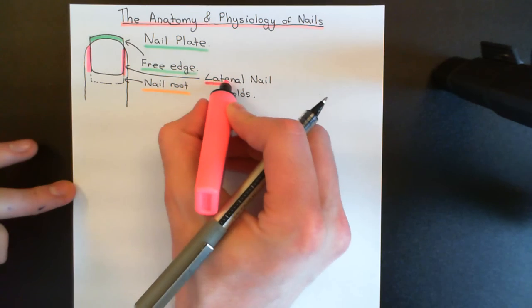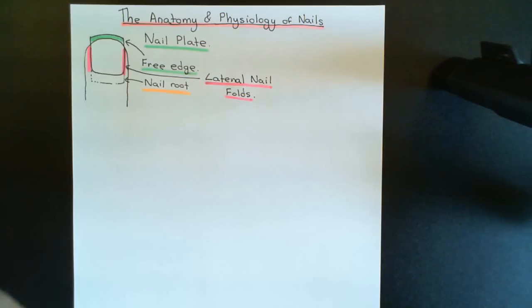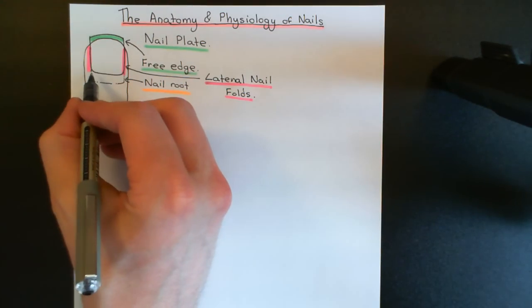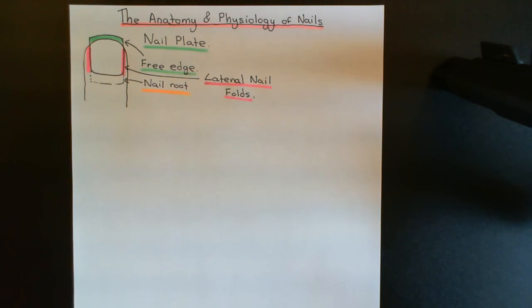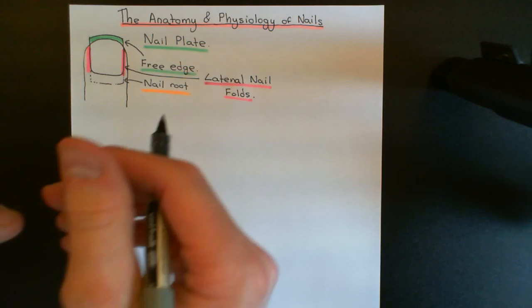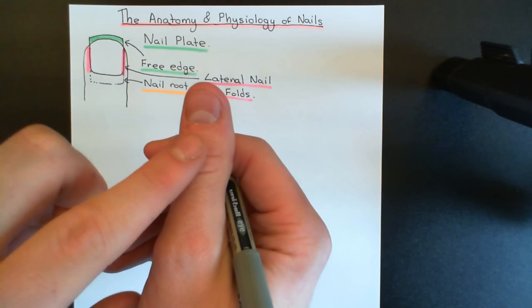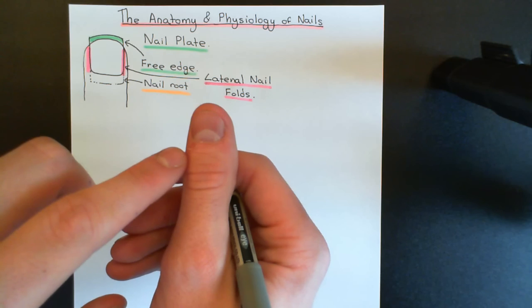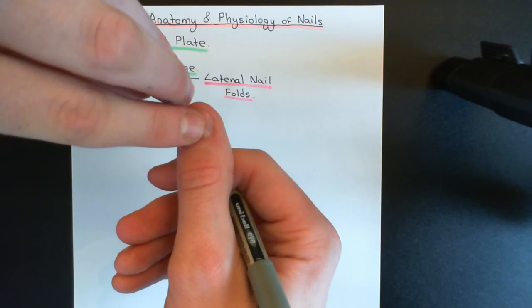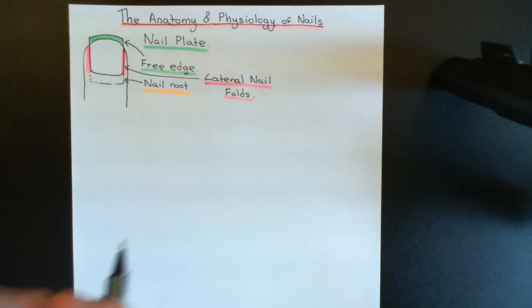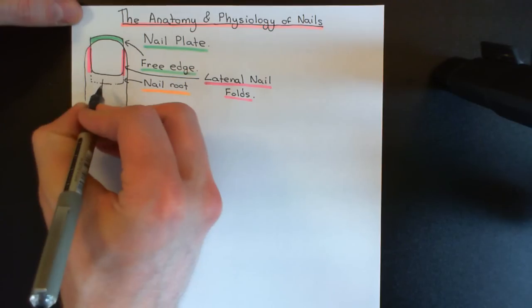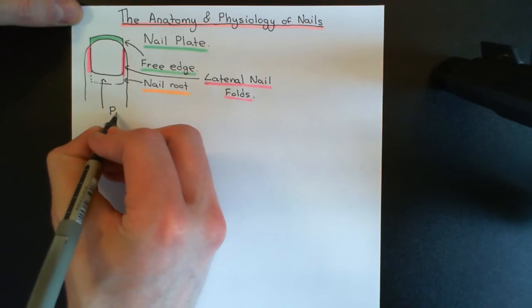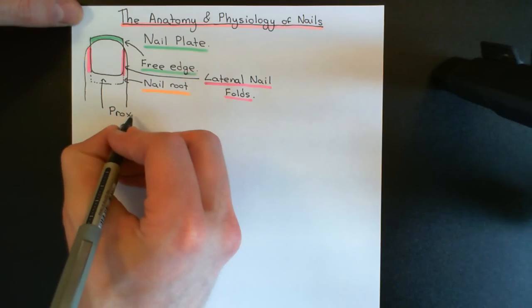Finally, what I'd like to point out on this picture is the name for this fold of skin that covers up the nail root. The nail plate extends down further than you can actually see — there's a portion called the nail root that is covered up by a fold of skin. This most proximal portion of the nail is the nail root, and that fold of skin over the nail root has a name: it is called the proximal nail fold, or there's an even fancier name for it — the eponychium.